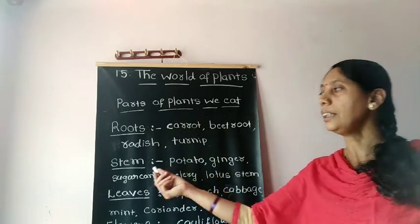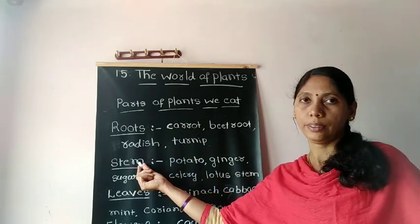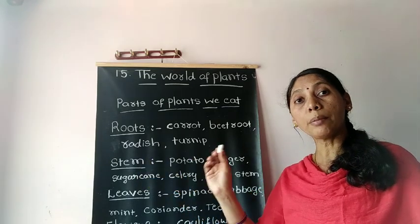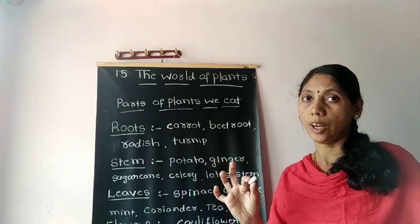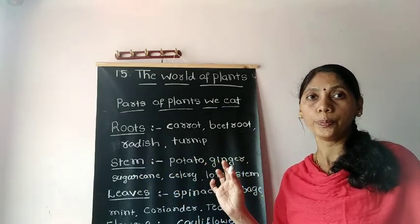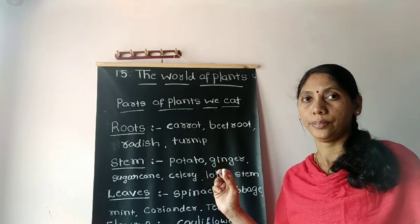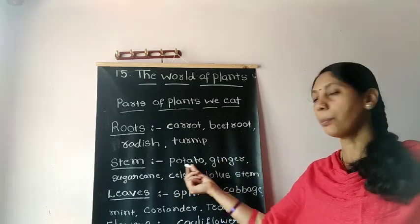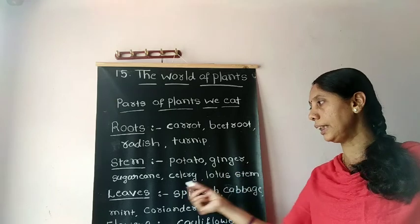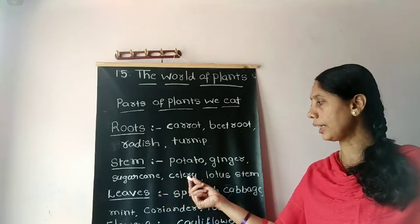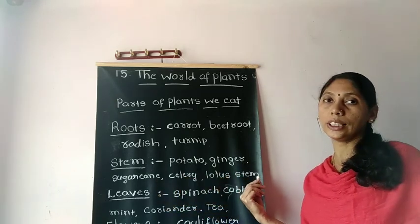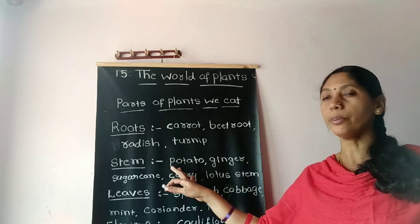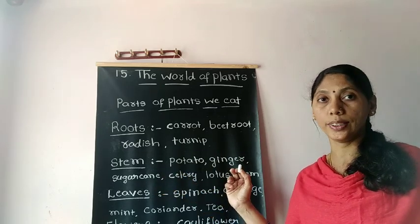Next, stem. We eat some plant stems as our food as well — like potato, ginger, sugarcane, celery, and lotus stem. These are all stems. We use them as our food.